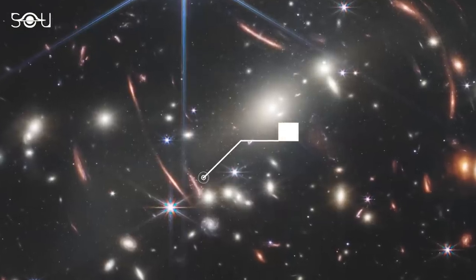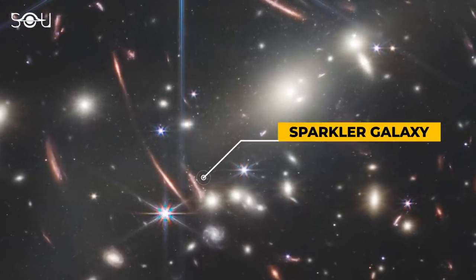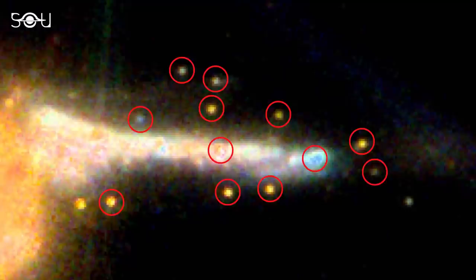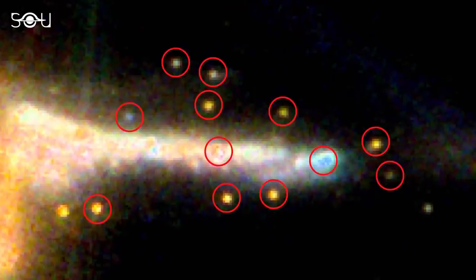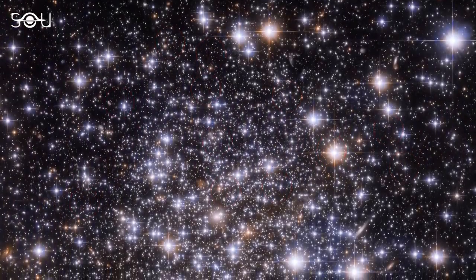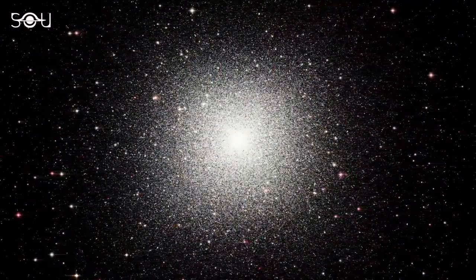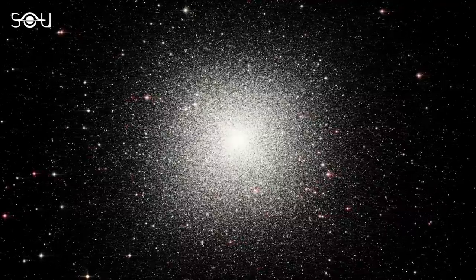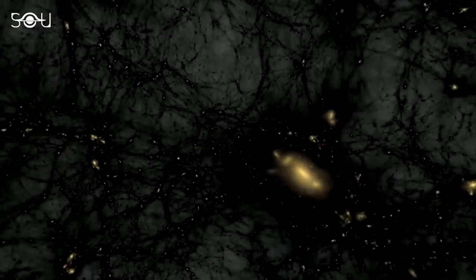One of the most notable cases was the sparkler galaxy lying near the center of the image. Webb spotted not one but as many as 12 potential globular clusters around that distant galaxy. But what's so special about these globular clusters? Why are they referred to as some of the most mysterious objects in the universe? And most importantly, how will this discovery help us better understand the era of the cosmic dawn?